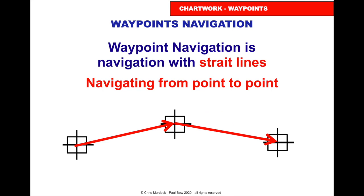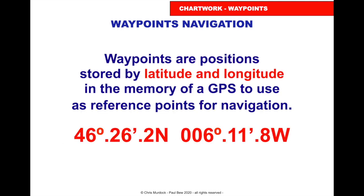Waypoint navigation is straight lines between point to point. It's a bit like a dot-to-dot on the chart — you input the waypoints and you're going from waypoint to waypoint using your GPS. They're stored by latitude and longitude in the memory of the GPS.